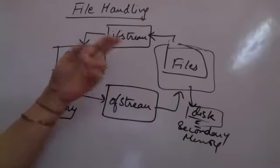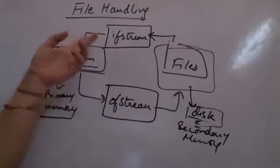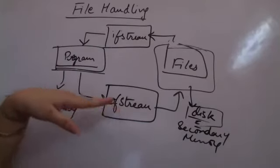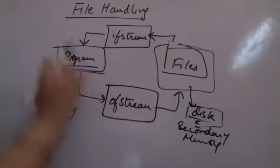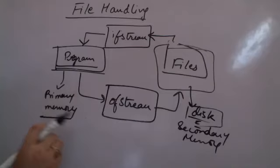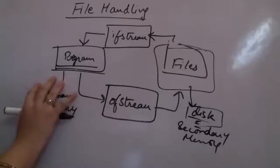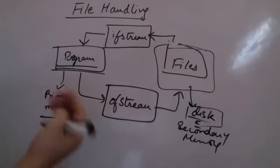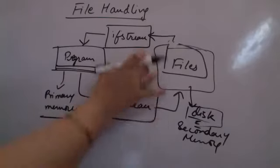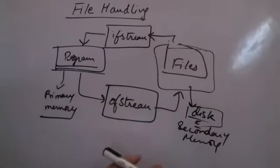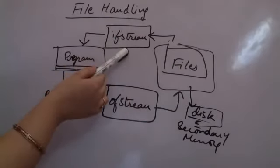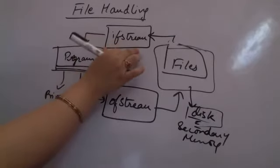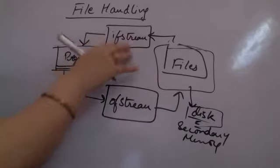To do that, we have two streams: ifstream and ofstream. Whenever we want to read from files we use the ifstream — input file stream. Whenever we want to do output, we have the output file stream. Streams act as buffers. While the program is running, the output stream temporarily holds changes, and once the program is done, whatever changes are made, the ofstream saves them permanently in the file.